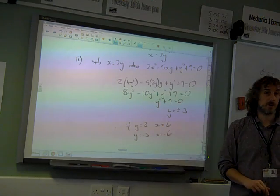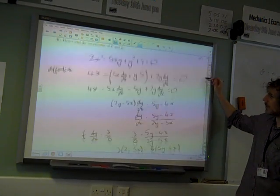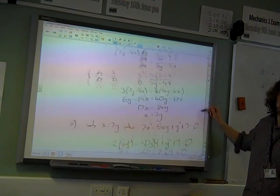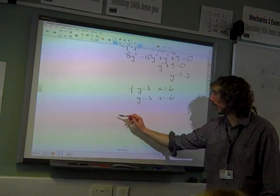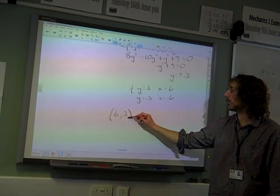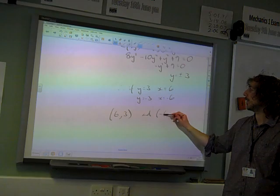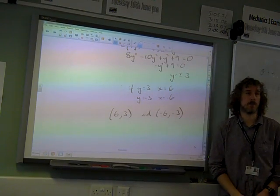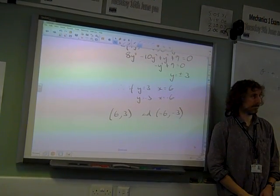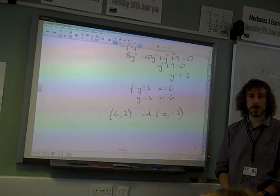We've got the points. What did it ask us for? The coordinates of P and Q. So in either order, the coordinates are (6, 3) and (-6, -3). That was good, wasn't it?